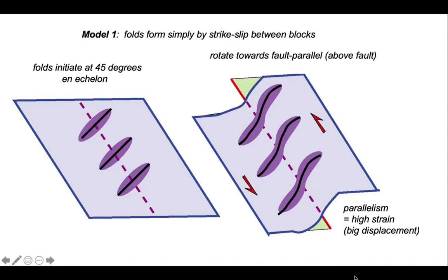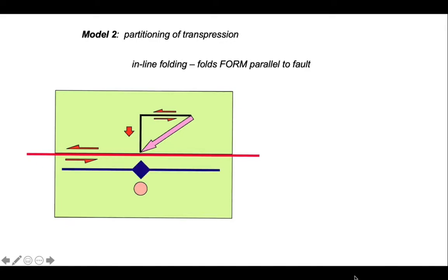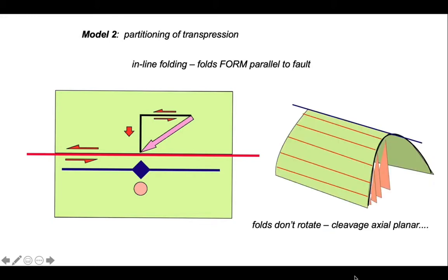So let's look at the alternative model, model 2. In this model, we're going to suggest that folds form parallel to the fault due to partitioning of oblique convergence, transpression. This is called inline folding. The folds form parallel to the fault rather than rotate into parallelism. So if the folds don't rotate, the cleavage will remain axial planar throughout.